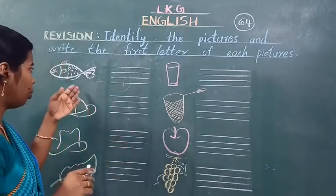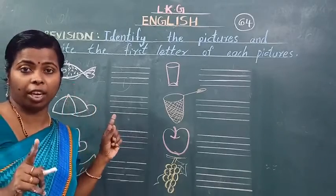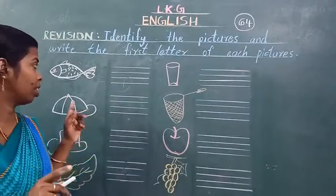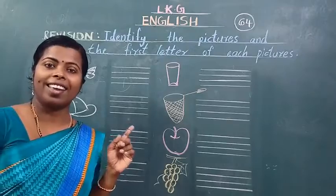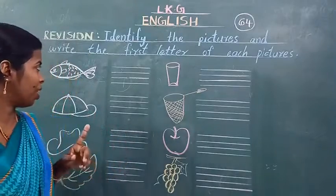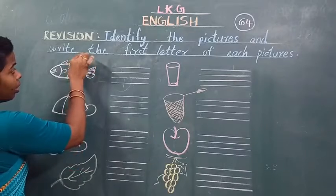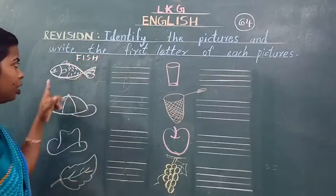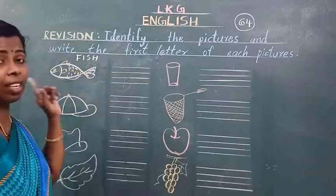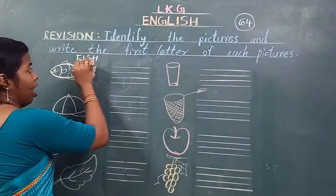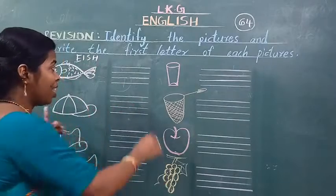Okay. Deekho. Ye fish hai, ye F for fish hai. Do you know the spelling of fish? Aapko maalum hai fish ka spelling? F-I-S-H, fish. Very good. Fish ka spelling kya hai? F-I-S-H fish. Ismei first letter kaon sa hai? Pahla ashar kaon sa hai? F hai. Idher haan koon sa letter likhenge? F likhenge.